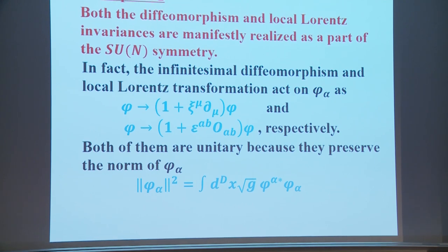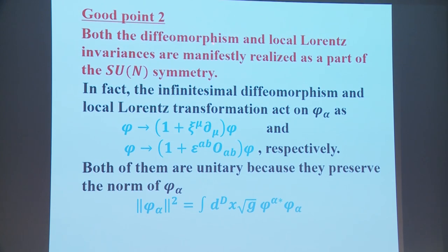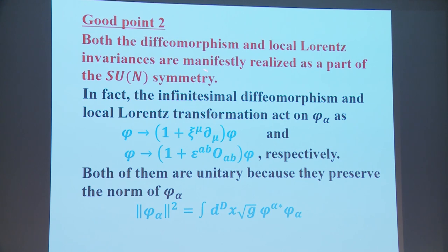The second good point is that both diffeomorphism and local Lorentz invariance are manifestly realized as part of the SU(N) symmetry. The infinitesimal diffeomorphism and local Lorentz transformation act on φ_α in a unified way, and both are unitary because they preserve the norm of φ_α.